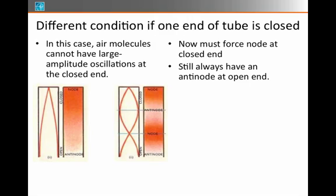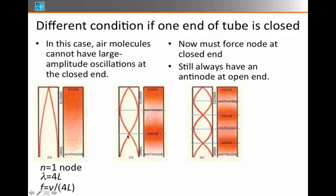I can then think about how many nodes will be along the length. So this first one had 1, here's 2, and there's 3. And we can again say the n equals 1 node would have a certain wavelength we can calculate. It looks like this is a quarter of a wavelength, so the wavelength would be 4L, and the frequency would be velocity over 4L.